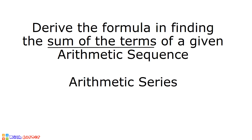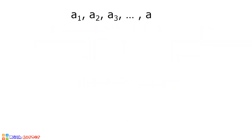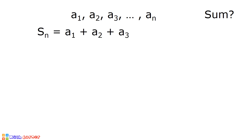It is denoted by S sub n. Let us consider a sub 1, a sub 2, a sub 3 up to a sub n as the terms of an arithmetic sequence. Let us find the sum. We can write this as S sub n is equal to a sub 1 plus a sub 2 plus a sub 3 all the way to a sub n.